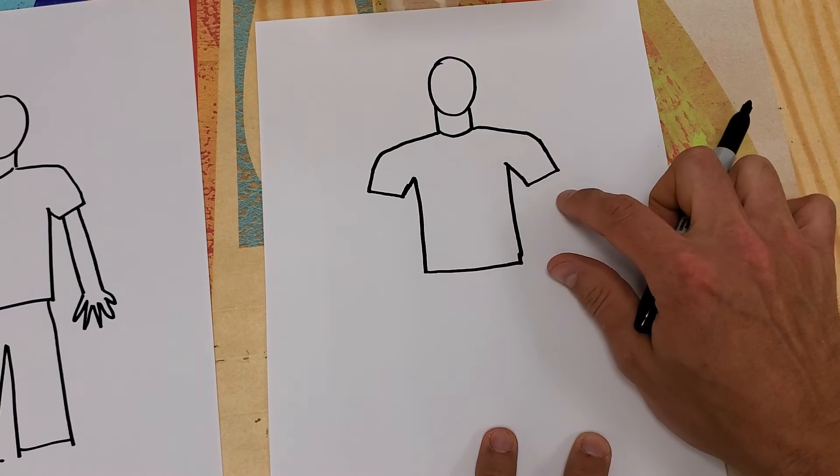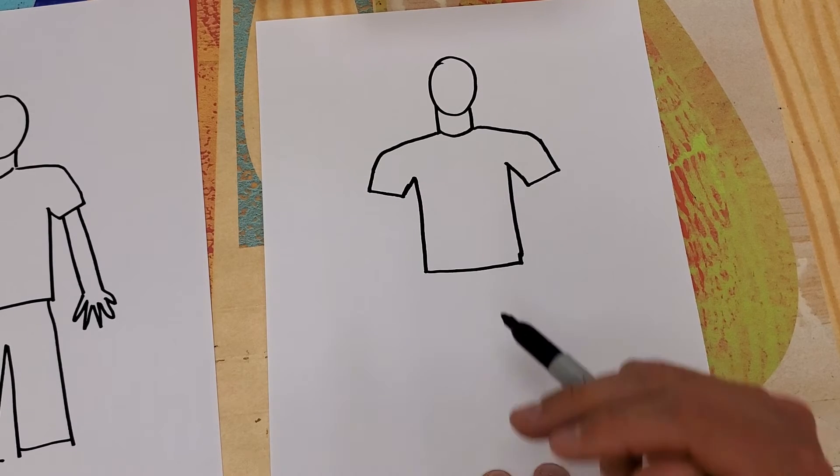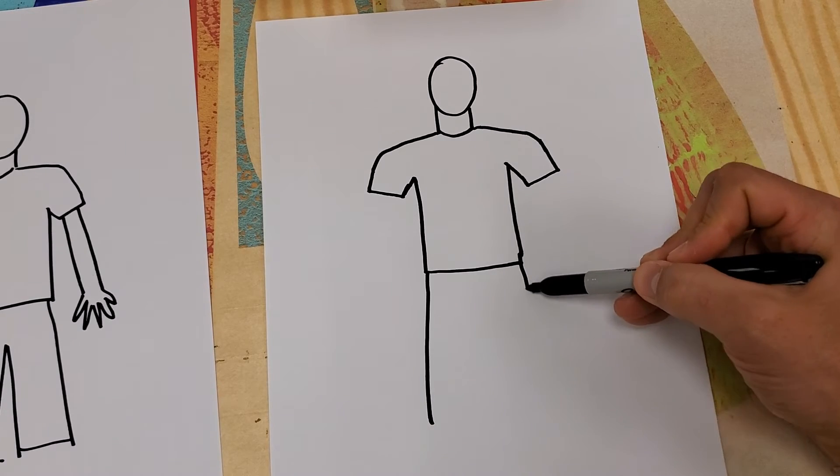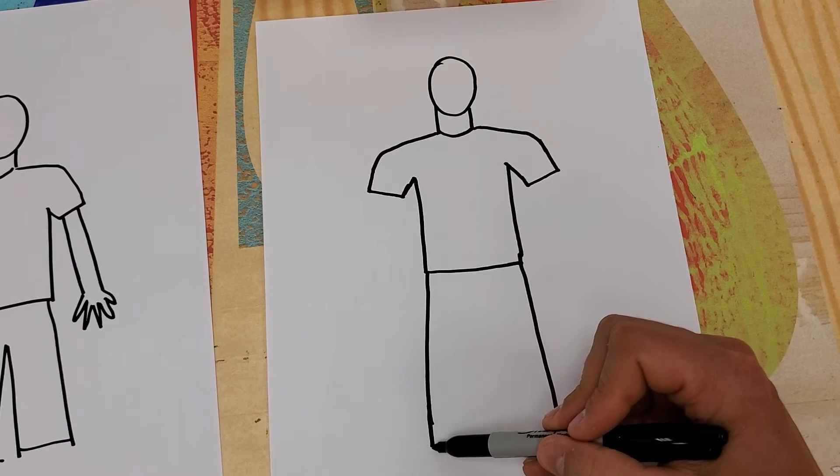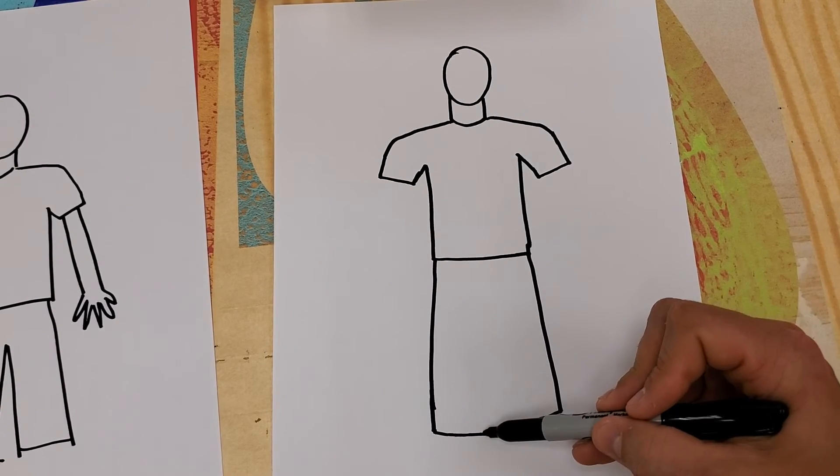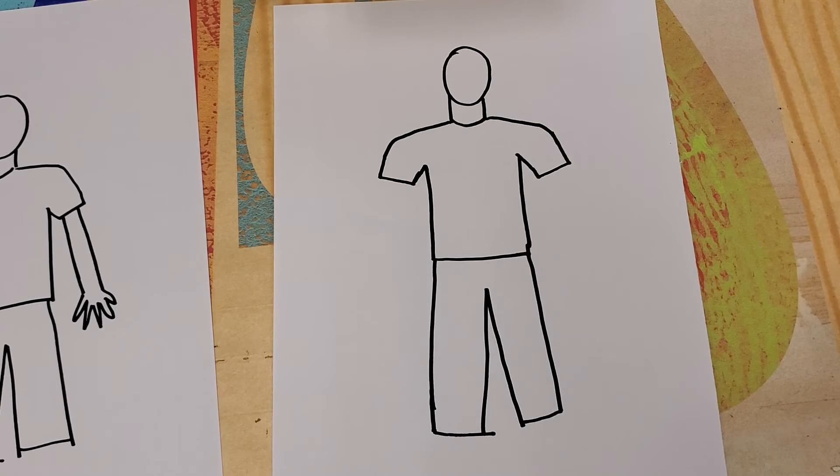Before I come back to do my arms and hands, I'm going to drop down the sides of my legs, my pants. Again, later on, if you're thinking of something different, it's the bottom of that pant leg, this one, triangle in between will show that there are two legs.